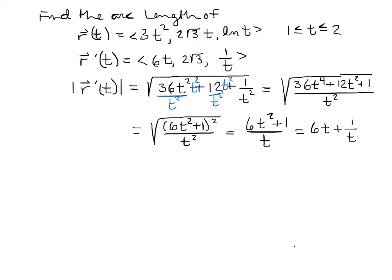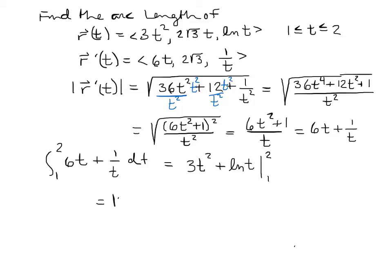We integrate 6t + 1/t from 1 to 2 with respect to t. The integral of 6t is 3t², and the integral of 1/t is ln t. Evaluating from 1 to 2: plug in 2 to get 3(4) + ln 2 = 12 + ln 2; plug in 1 to get 3 + ln 1 = 3 + 0 = 3. So the result is 12 + ln 2 − 3.